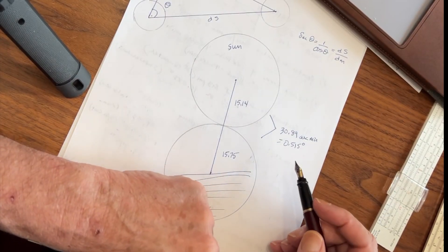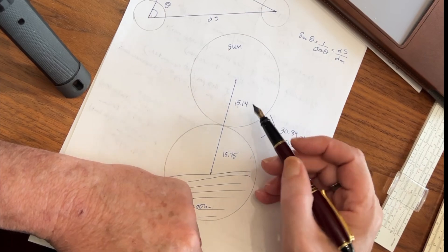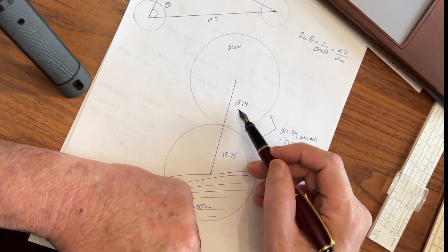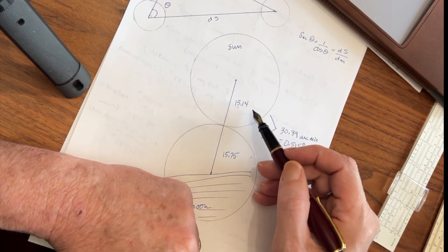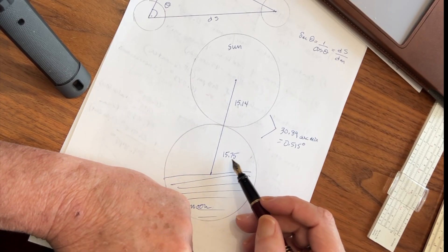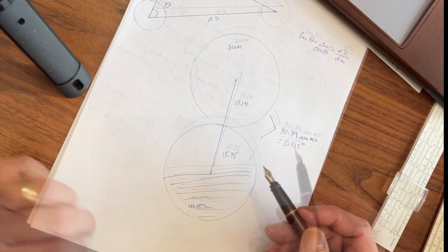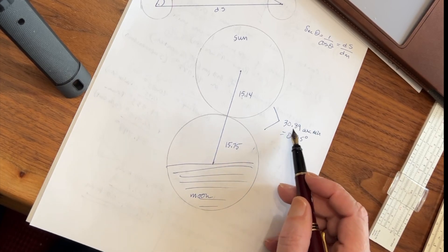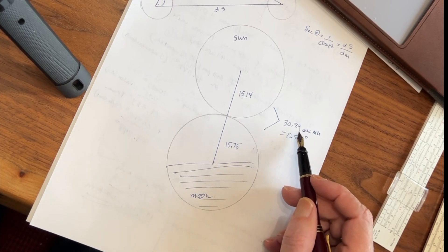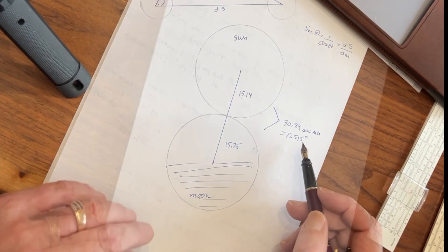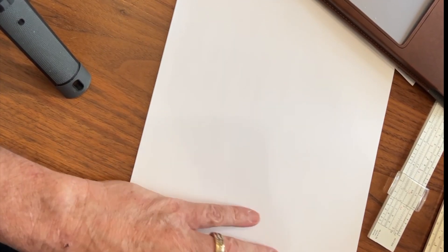On today's date at about 3:13, according to Stellarium, the half-diameter of the Sun was 15.14 arc minutes and the half-diameter of the Moon was 15.75 arc minutes. Combining those readings means you have to add 30.89 arc minutes, or 0.515 degrees, to your raw sextant reading. So let's have a look at the readings I got.